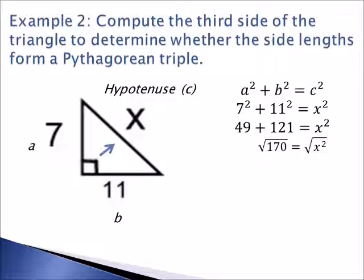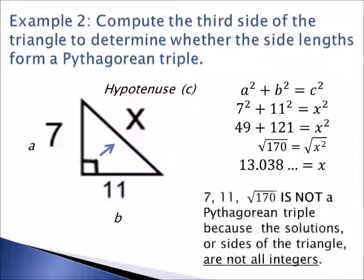After square rooting both sides, we are left with 13.038 which continues on. Due to the fact that the square root of 170 is not a perfect square, this is not an integer value. Therefore, 7, 11, and the square root of 170 is not a Pythagorean triple.